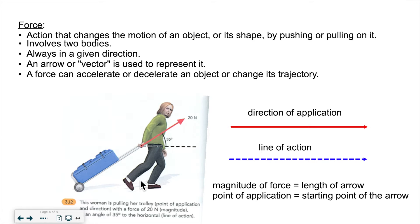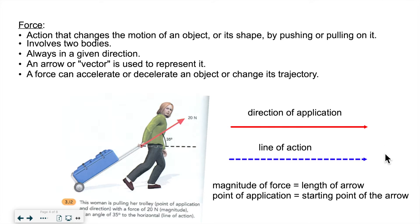A force can accelerate or decelerate an object — in other words, make it go faster, slower, or change its direction and trajectory. If an object is moving in a certain direction and another object collides with it, the first object will no longer move in the same direction because of the force applied by the second object. The arrow shows the direction, and its length represents how strong the force is. Sometimes you'll also see a dotted line, which is the line of action.